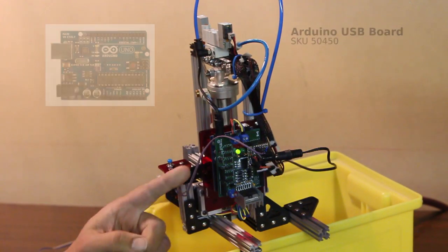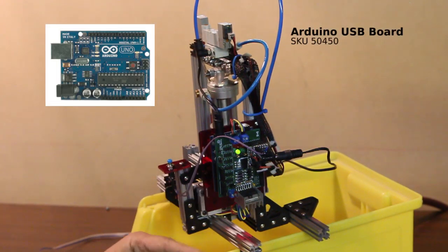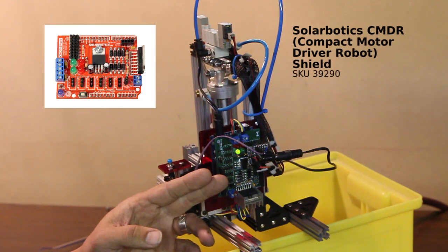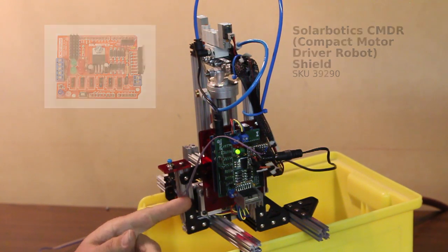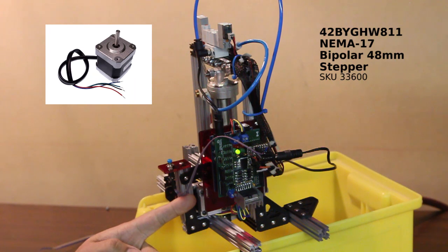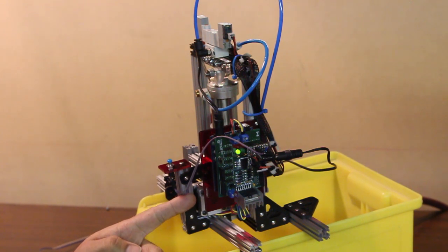The heart of any good project of course is your Arduino, and sitting on top of it we have our Commander Motor Driver Shield in stepper configuration because after all we are driving a stepper motor down here which actually advances our wire. Additionally, we're also driving the control pneumatics up top.